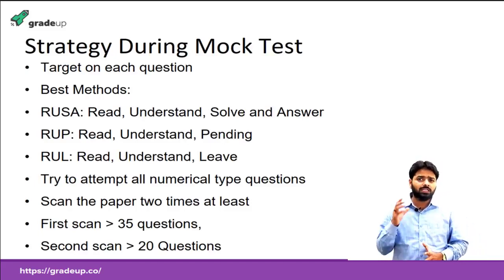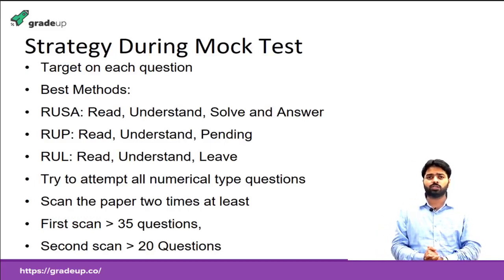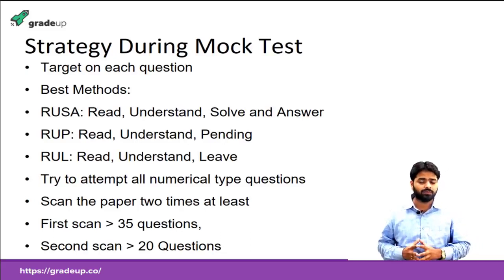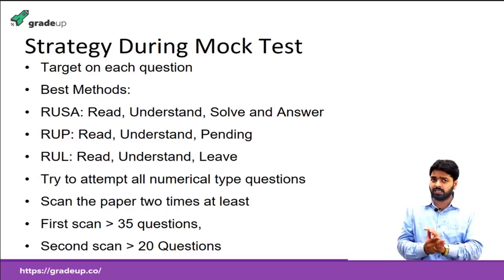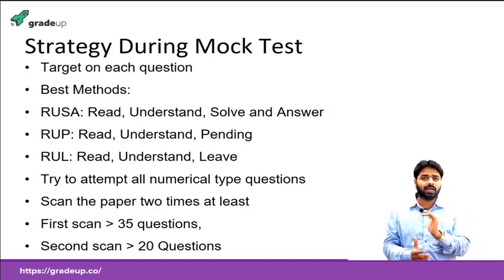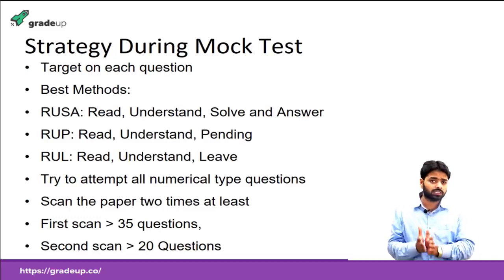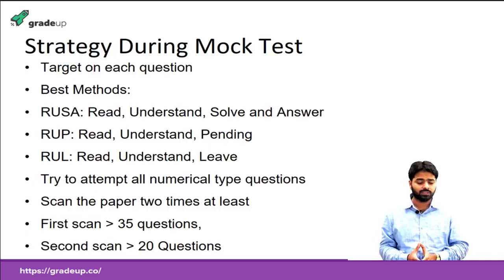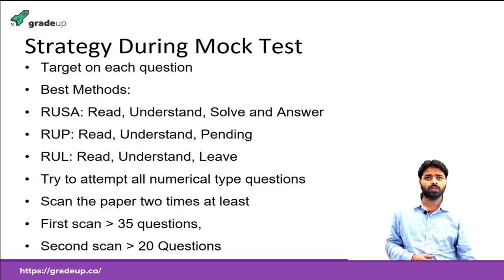Scan the paper at least two times. In the first scan, try to attempt all easy questions — more than 35 out of 65 should be targeted. Your goal in the first scan is to attempt 40 to 50 questions. In the second scan, solve the questions you understood but need more time. In the third scan, if time remains, revisit the questions you could not understand initially.